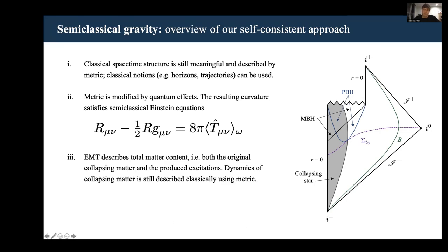Lastly, this renormalized energy momentum tensor describes the entire matter content, which means both the collapsing matter and the quantum field excitations it produces. This joint treatment of the entire matter content is really the key feature of the semiclassical approach.